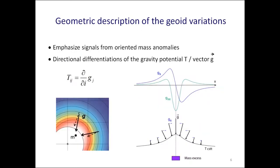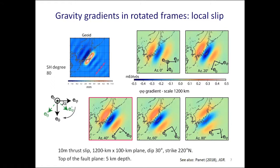These are the second order derivatives of the gravity potential. The idea is simple: if you have a mass excess, you have an increase in the gravity intensity above the source and also deflection of the gravity vector towards the source. If we take a direction perpendicular to the axis of the source and map the rate of variation of the component of the gravity vector in that direction, we have a sharper delineation of the mass anomaly than when we look at the geoid. It's useful to extract an elongated signal along the direction of interest and separate it from other superimposed signals in the gravity field.